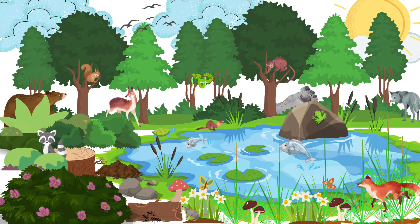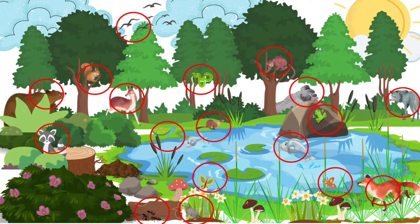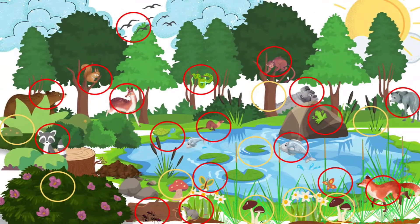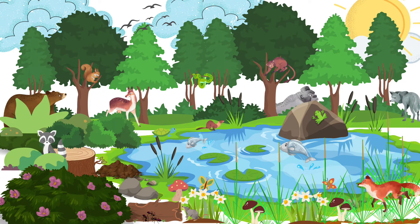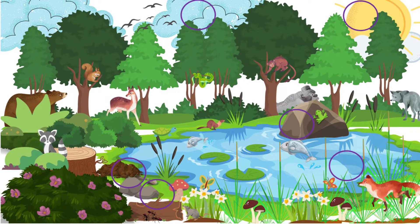Take a look at this picture. What are the different biotic components that you can identify? That's correct! These are the animals and the plants. How about the abiotic components? You are right! These are the sun, clouds, air, rocks, water, temperature, and soil.